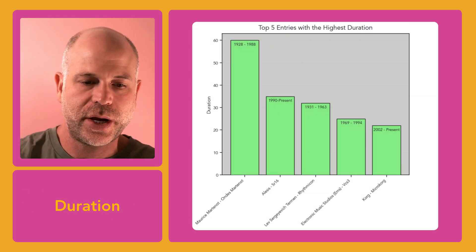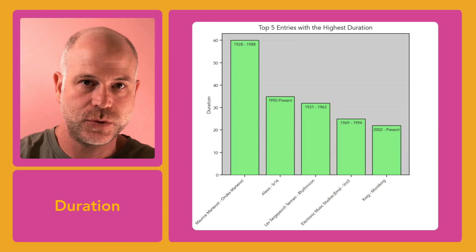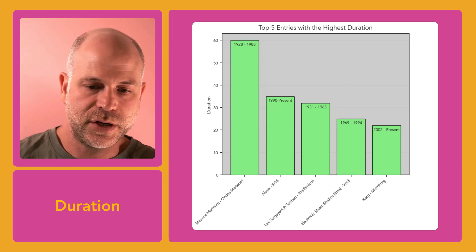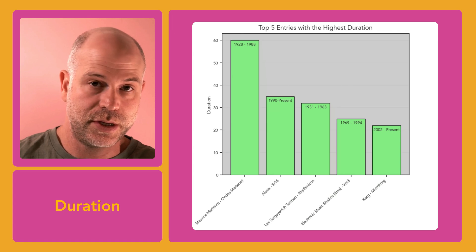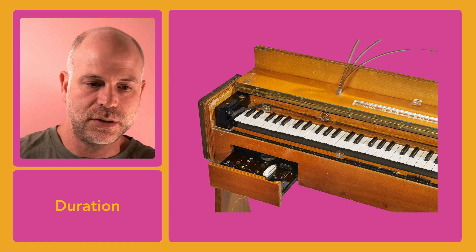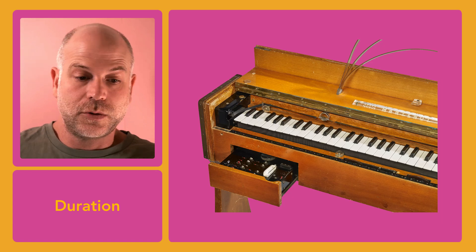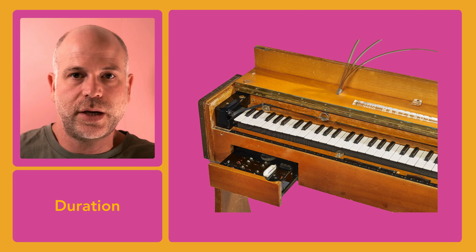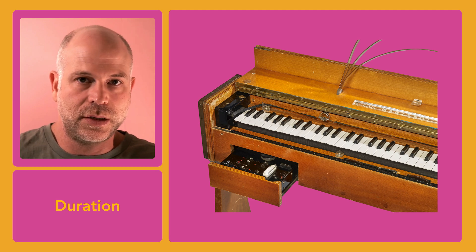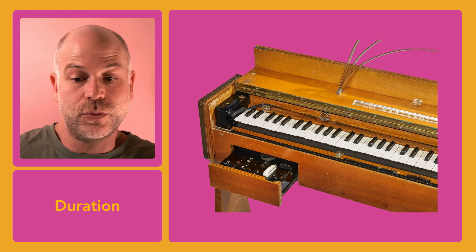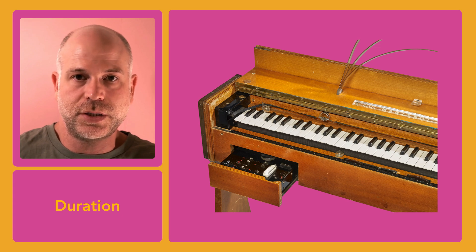Next, I wanted to look at the duration of synths produced by filtering the data frame to show the five largest duration values. The first one on the list with a pretty insane production run of 60 years, from 1928 to 1988, is the Ondes Martenot. I hope I'm pronouncing it right. To be fair, only 60 units were made, but nonetheless, it made its way to a lot of movie soundtracks and even got some recent appearances, notably featuring Jonny Greenwood of Radiohead using it on stage.